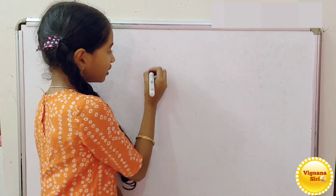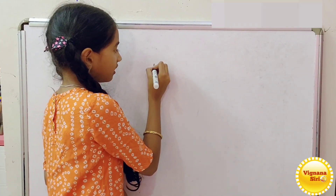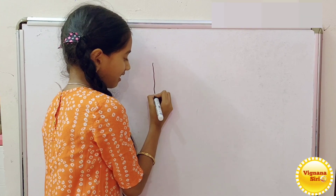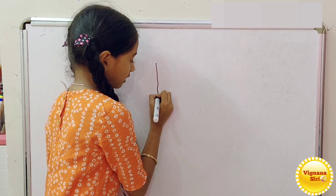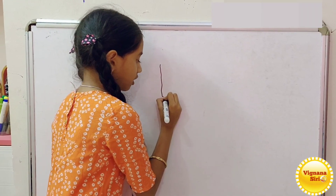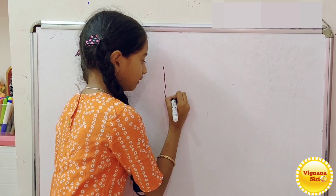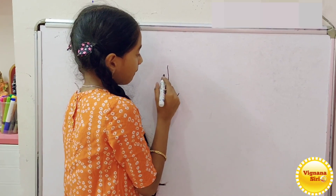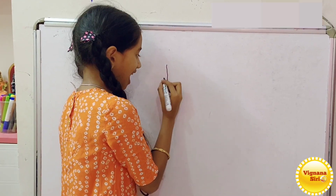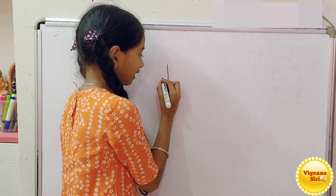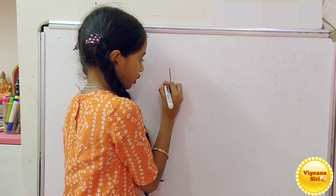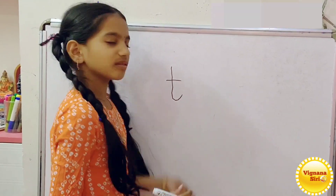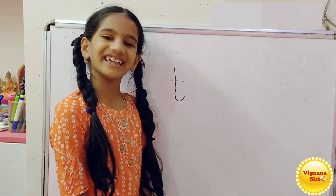First, you should write one standing line. At the end of the standing line, you should write one up curve. And at the middle of the standing line, you should write one sleeping line. We need small letter T.